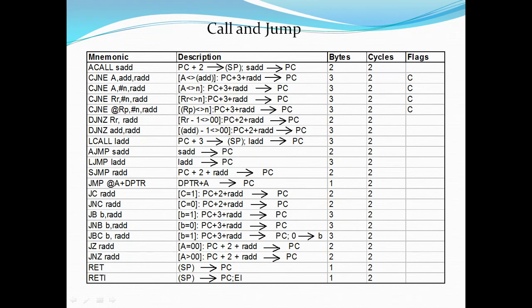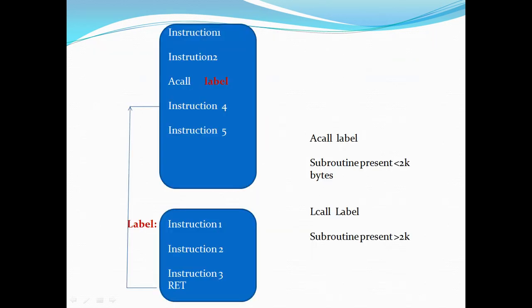There are two call instructions: ACALL and LCALL. ACALL stands for absolute call and LCALL is long call. Both are used to execute your subroutines, but depending on your program size, you choose differently. If your subroutine is present within less than 2 kilobytes, you can prefer ACALL. If your subroutine is present beyond 2 kilobytes, you can prefer LCALL. This is the view of your call instruction from assembly language.